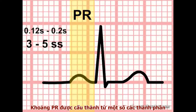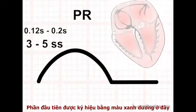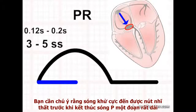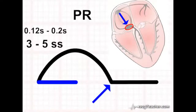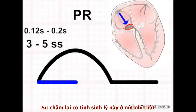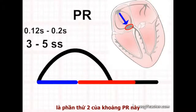The PR interval is made up of a number of elements. The first component, represented here in blue, is the time taken for the depolarisation wave, normally generated from the SA node, to traverse the atria and reach the AV node. Depolarisation reaches the AV node well before the end of the P wave. However, the AV node delays the transit of the inputs into the ventricles. This physiological delay in the AV node is the second major component of the PR interval.